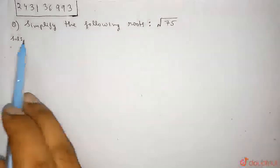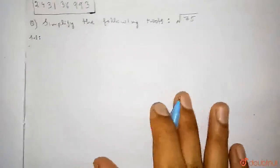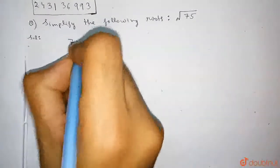So, in this question it is asked, simplify the following roots: root over 75. So, first we will do, that is we will factorize 75.